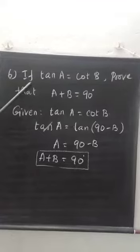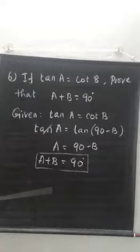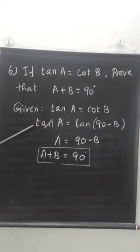Next question: if tan A is equal to cot B, prove that A plus B is equal to 90°. This is a tan, this is a cot. So we need to use complementary angles.